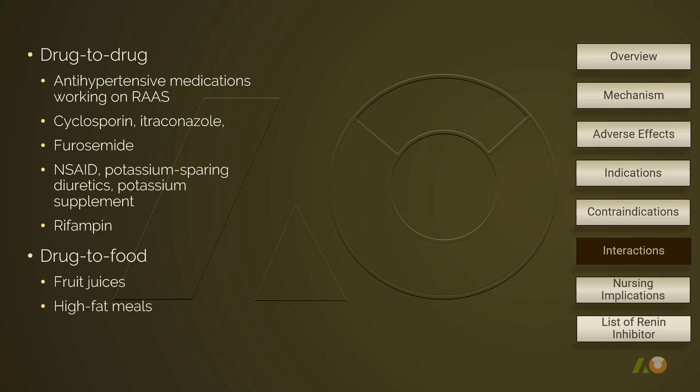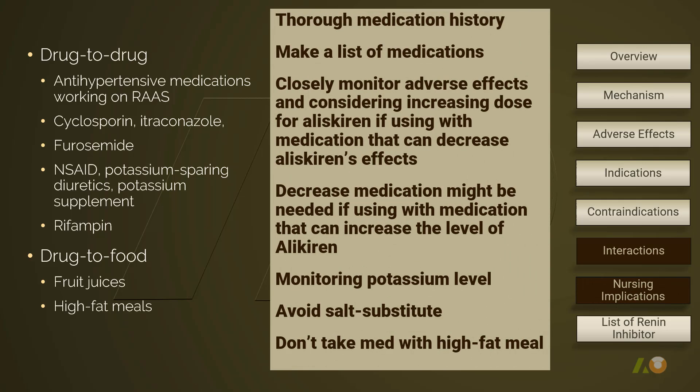Fruit juice — including apple, grapefruit, and orange juice — can decrease alaskirin's level. It is found that a high-fat meal may significantly decrease the alaskirin level. Nursing care for patients taking alaskirin includes a thorough medication history intake; making a list of medications can be useful to avoid drug-to-drug interactions. Increasing doses of alaskirin may be needed if using it with a medication that decreases its effects, while decreasing doses may be needed if using it with a medication that increases its level. Monitor potassium level, especially when the patient takes ACE inhibitors together with alaskirin. Avoid salt substitute, and correct fluid volume imbalance or salt depletion before initiating therapy with alaskirin.